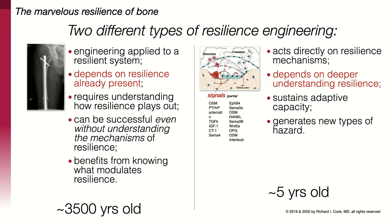So we see two different kinds of resilience engineering: one that's about 3,500 years old, and the other that's about five years old. The oldest one depends upon resilience that's already present and our understanding of how resilience plays out — we apply engineering to an already resilient system and can be successful without knowing too much about the mechanisms that underlie that resilience. On the other hand, there's this newer type which acts directly on resilience mechanisms, depends upon a quite deep understanding of resilience, and admittedly probably generates some new types of hazards because it's actually tweaking the signaling going on.